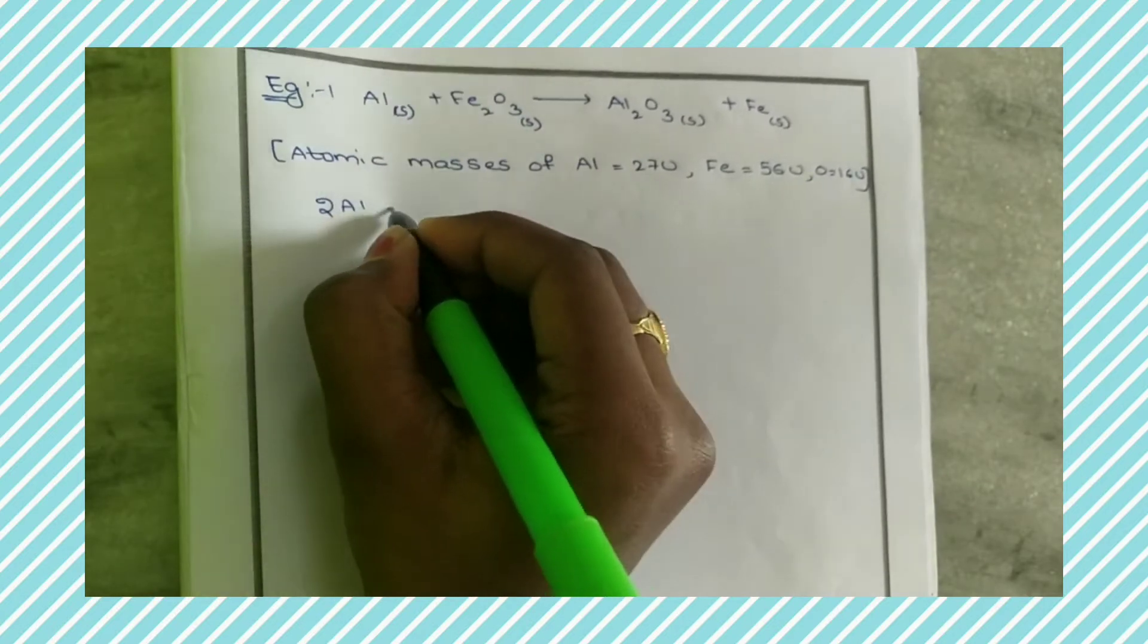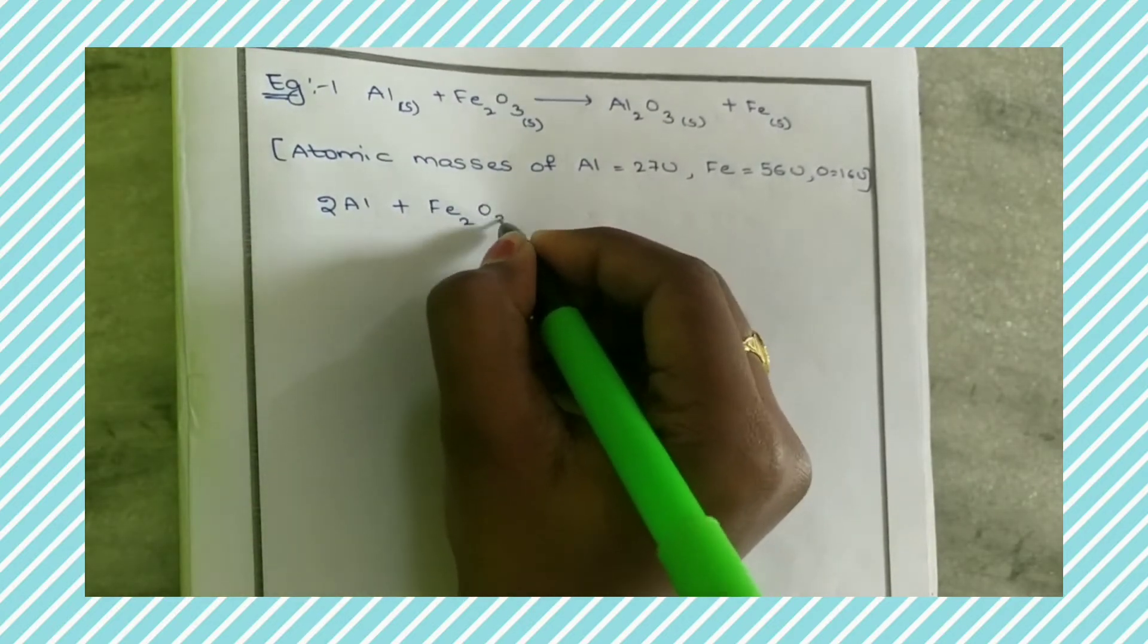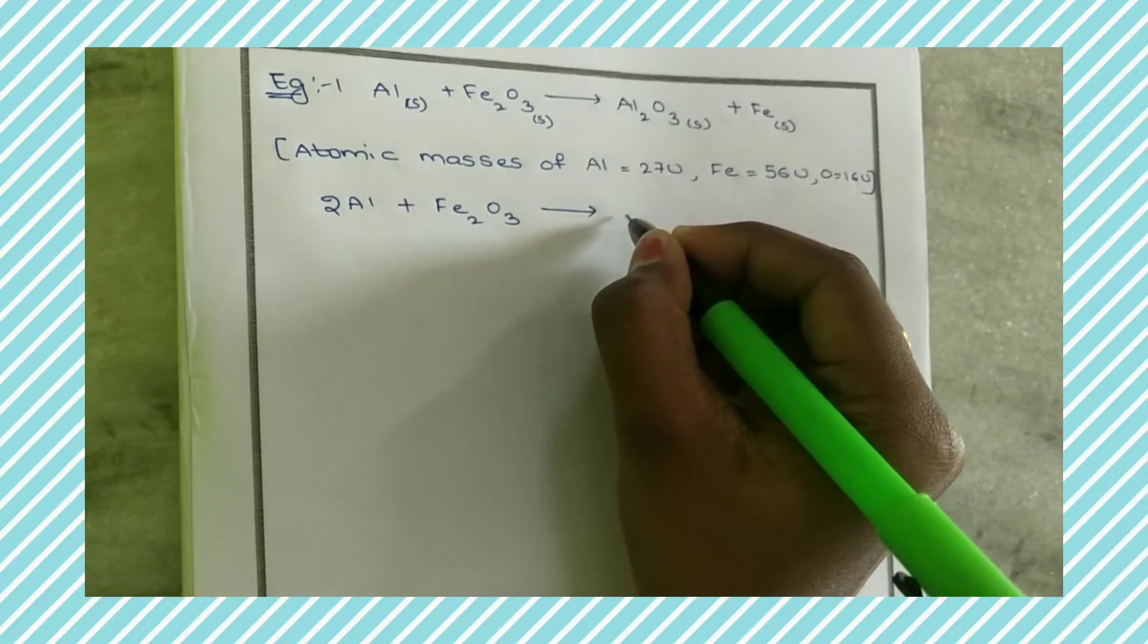2Al plus Fe2O3 gives rise to Al2O3 plus 2Fe.